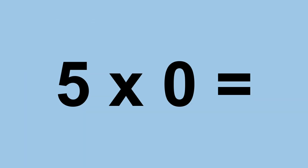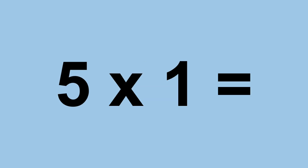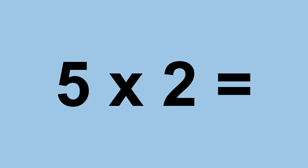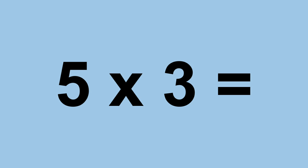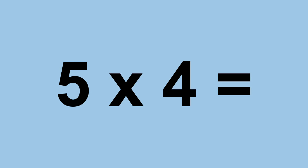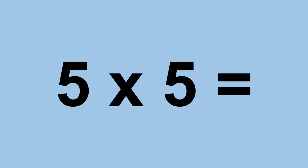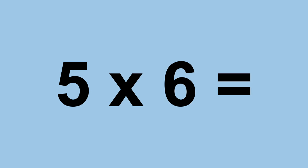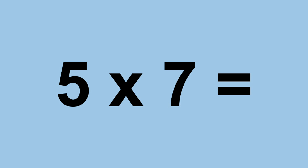5 times 0 equals 0. 5 times 1 equals 5. 5 times 2 equals 10. 5 times 3 equals 15. 5 times 4 equals 20. 5 times 5 equals 25. 5 times 6 equals 30.